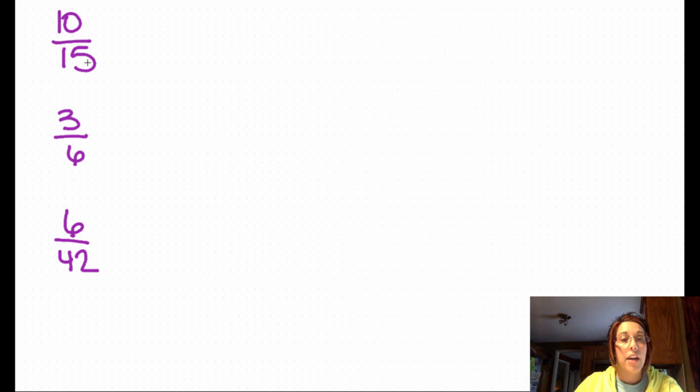Okay, welcome back. I know that 5 is a factor of both 10 and 15. 10 divided by 5 is 2. 15 divided by 5 is 3. That means my lowest terms is 2/3.